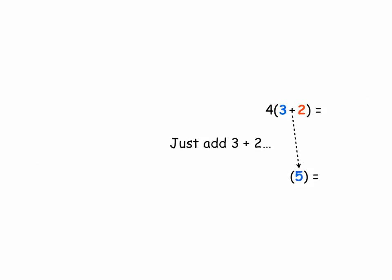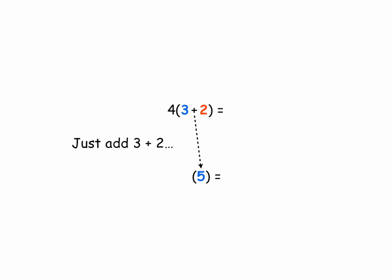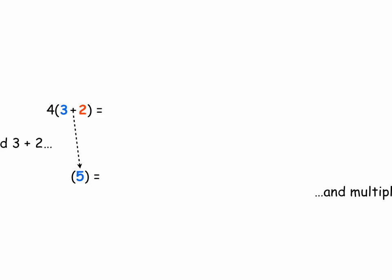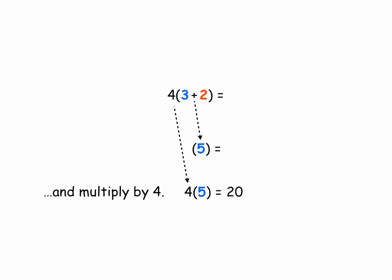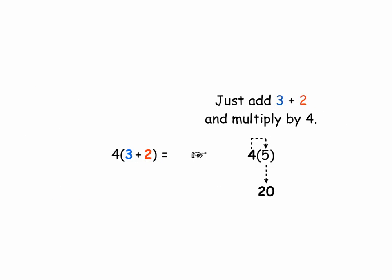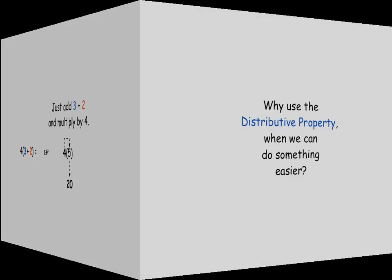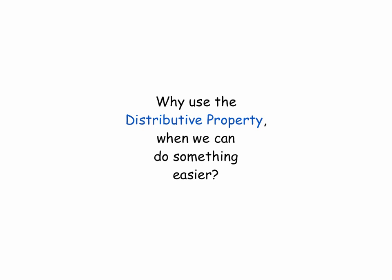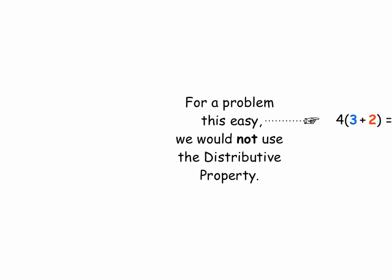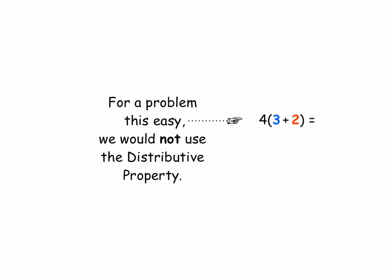But there is another way to work this problem. Just add three plus two — that gives you five — and multiply by four. Four times five equals twenty. Just add three plus two and multiply by four. Why use the Distributive Property when we can do something easier? For a problem this easy, we would not use the Distributive Property.